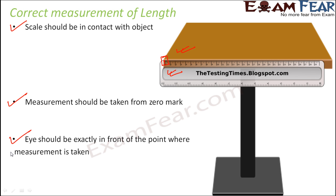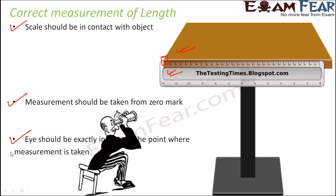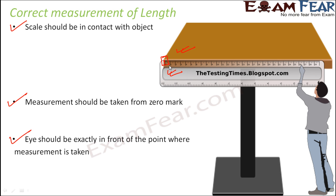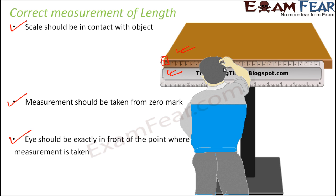The third point is that your eye should be exactly in front of the point where the measurement is taken. Because we are reading the measurement with our eye, the placement of the eye is also important. You should not sit far away and try to observe the measurement from there. You should also not be at a height lower than the measuring scale. Your eyes should be at the same level as the object where the measurement is happening — that is the right way.